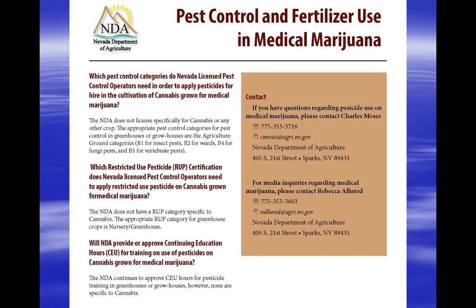In the state of Nevada, a pesticide applicator can obtain information about the legal use of pesticide in growth facilities by visiting the department's website at www.agri.nv.us. This fact sheet can be found on the Environmental Services webpage and gives an overview of Nevada requirements, especially how they apply to pesticide licensed-for-hire applicators who may want to apply pesticides for hire in marijuana cultivation facilities.